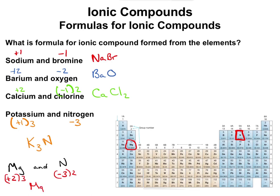So the final formula is Mg₃N₂. You have to be careful when using the crisscross method — you want to make sure your subscripts are always in their simplest form, similar to reducing fractions to their lowest common denominator. Both subscripts cannot be further simplified together.